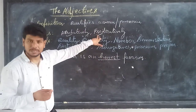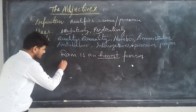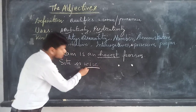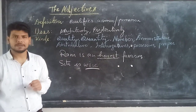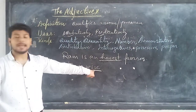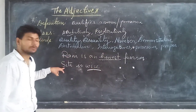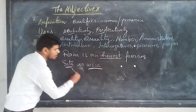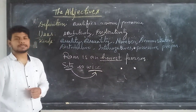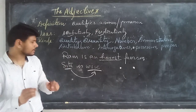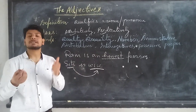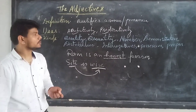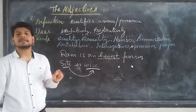Secondly, we will talk about predicative use. For example, 'Sita is wise.' In this sentence, 'wise' is the adjective, but it is used at the end of the sentence, not directly with a noun. However, it refers back to the noun. Therefore, it is called a subject complement — it relates to the subject. Who is wise? Sita is wise. This way of using an adjective is called predicative use.